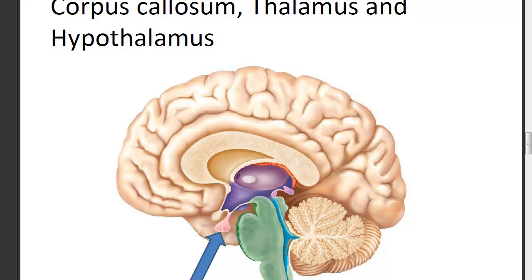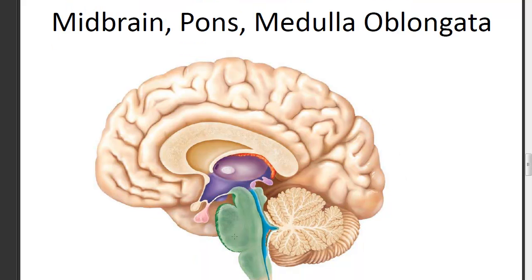Moving down to the brain stem, shown in green, there are three major regions. Just below the hypothalamus and thalamus is the beginning of the brain stem — this is called the midbrain at the top. Then there is a large swelling extending outward on the anterior surface called the pons. Below that is a slightly wider region called the medulla oblongata. Below that, where it narrows, it becomes the spinal cord.